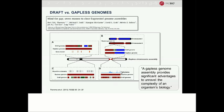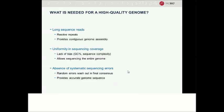What matters in the end is what you can do with that genome and what you understand with regard to the biology. There are three things you need for generating a high-quality genome in terms of sequencing technologies. First, you need long, continuous sequence reads because you want to resolve repetitive elements in the genome and provide contiguity in the genome assembly. Second, uniformity in sequencing quality and coverage relative to GC content or sequence complexity of the DNA, which allows you to sequence the entire genome. Third, system accuracy — you can't have systematic sequencing errors because they will pile up and not be washed out in consensus. Random errors are fine because they wash out as you build the final consensus.